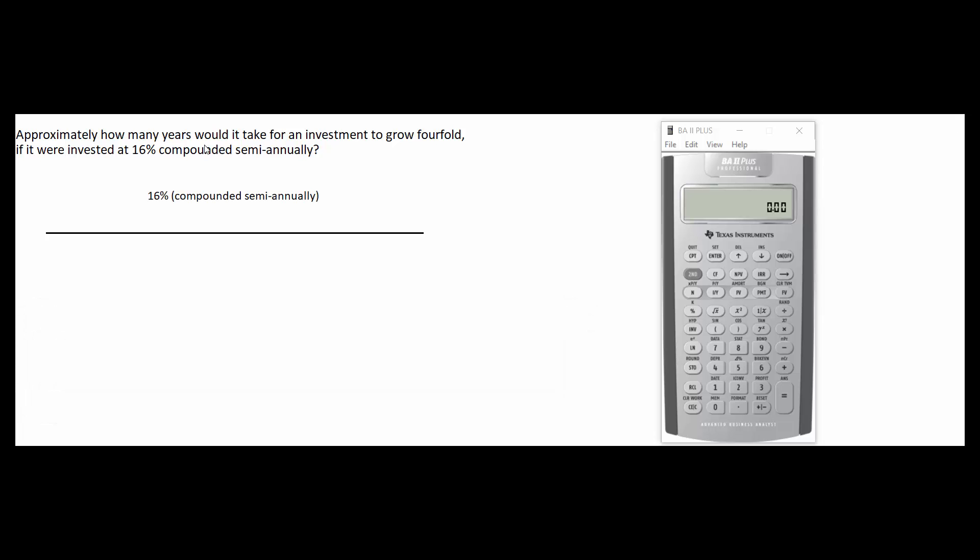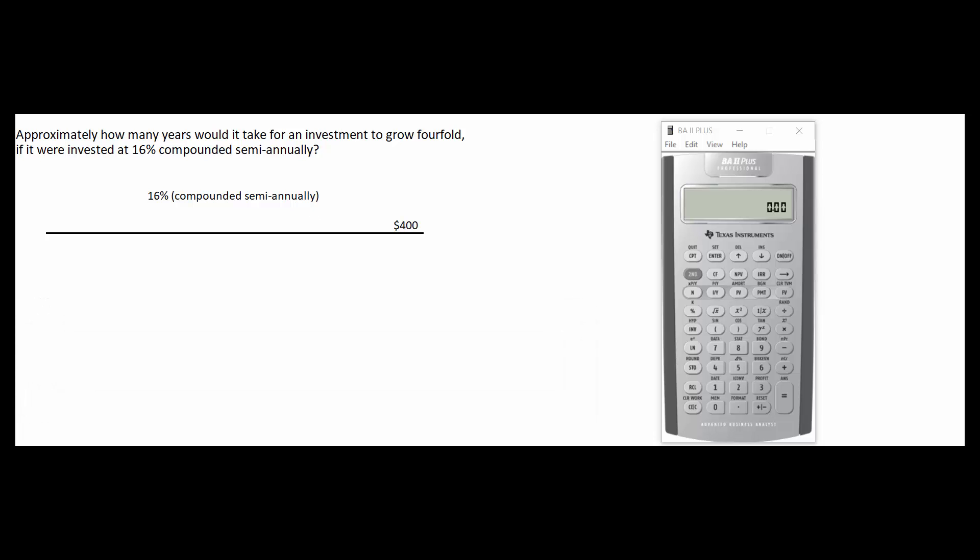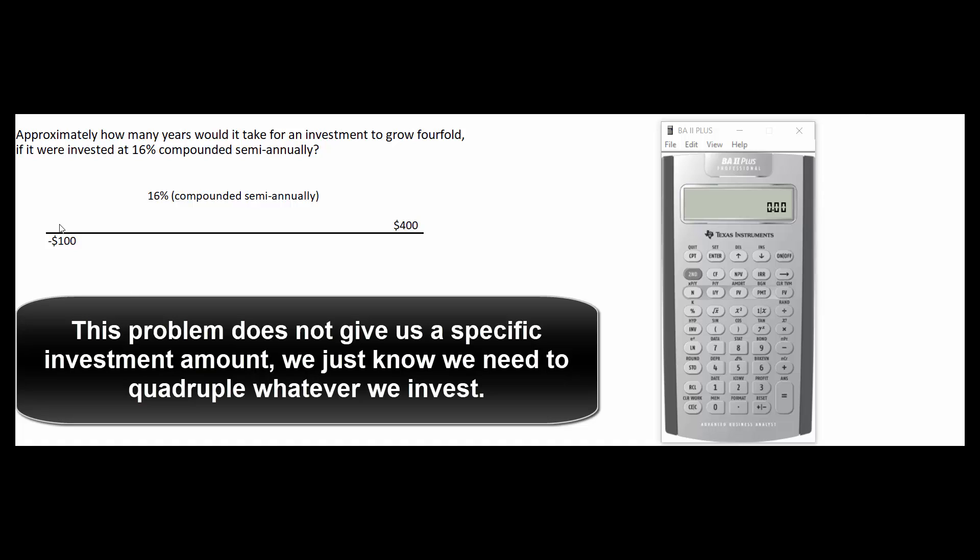We know the interest rate is the annual rate is 16% compounded semi-annually. That means that the periodic rate is 8%. 16% per year is 8% per semi-annual period. We also know that we're going to quadruple our money. So here I assume we spent $100 and got back $400. This could be $1 and $4 or $4 and $16. Whatever number we plug in as dollars out we're going to get four times that as dollars in.